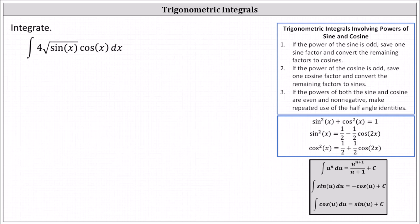We want to integrate the integral of 4 times the square root of sine x times cosine x dx. In our lesson, we discussed how we can integrate when the integrated function contains powers of sine and cosines, shown here on the right, but we don't want to forget about basic u substitution, which applies for this example.